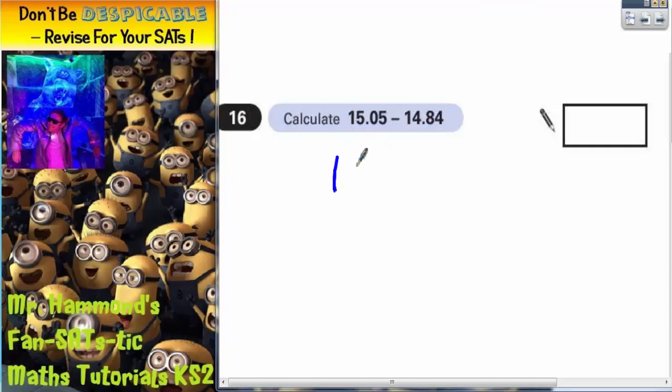What we must do is stay calm and write it as a column method, with one number lined up above the other. So 15.05, 14.84.